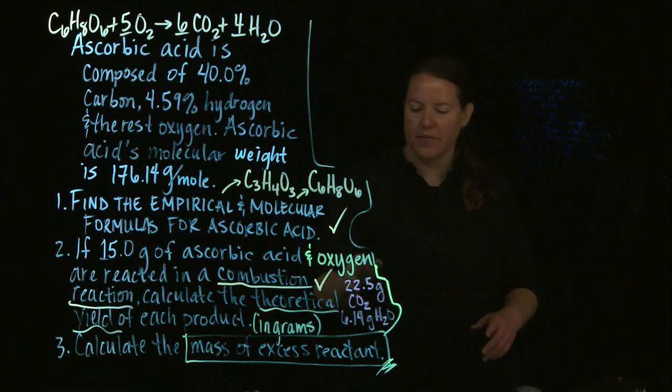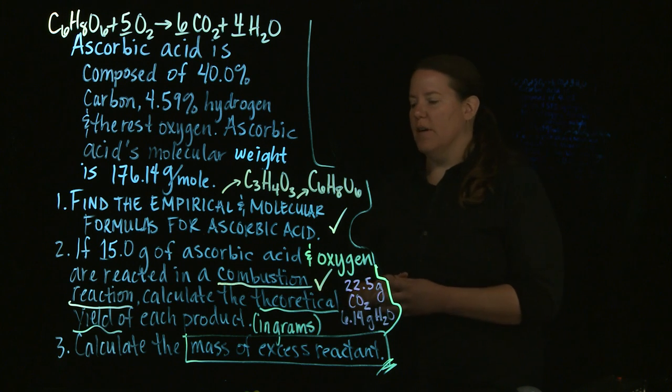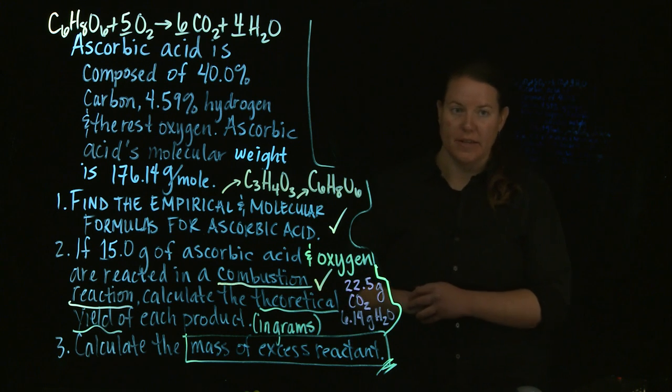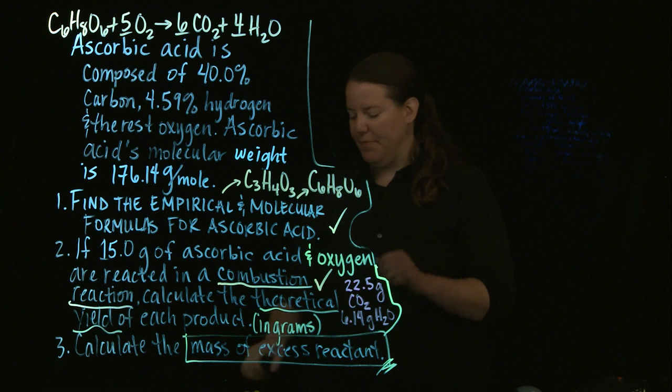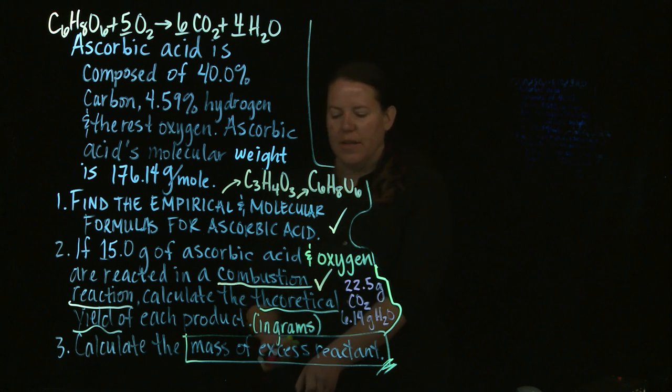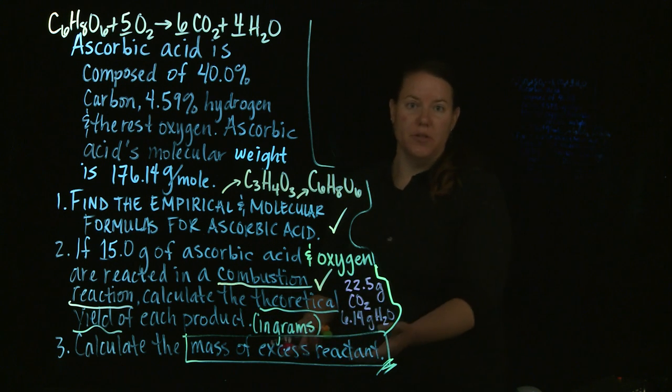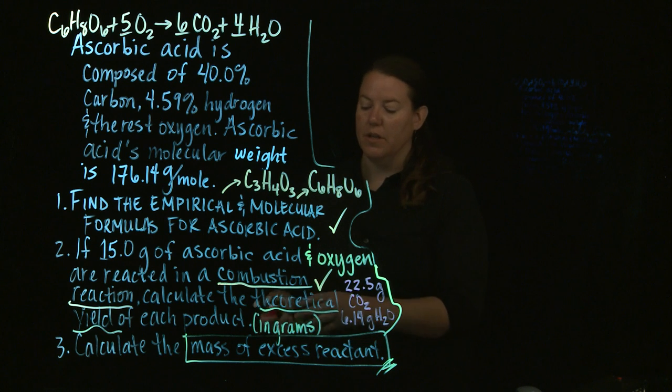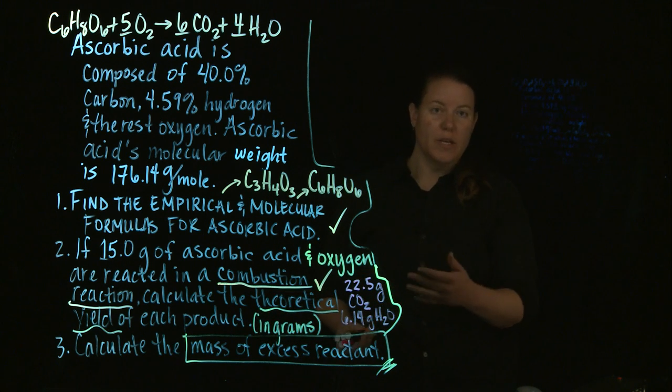We've calculated the theoretical yields of each. That's what these two are, and now we need to calculate the mass of excess reactant. To calculate the mass of excess reactant, you can go about this in two different ways. You can first go about it in a stoichiometric kind of way.